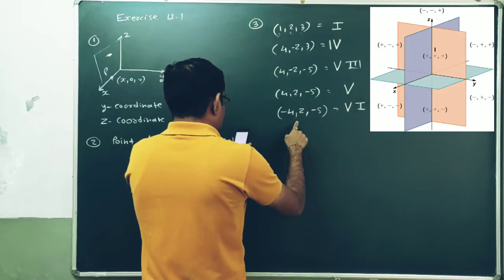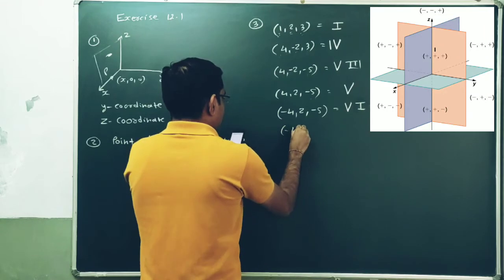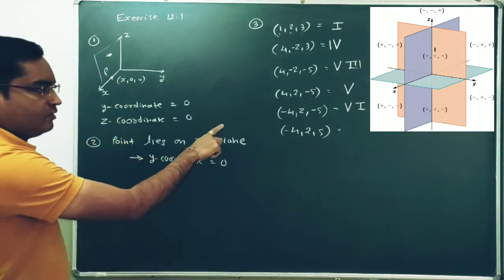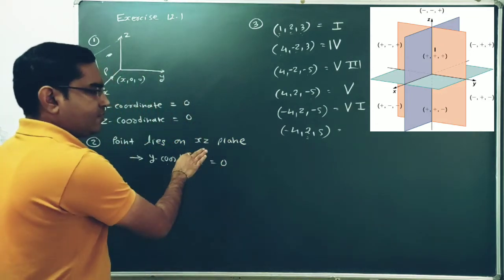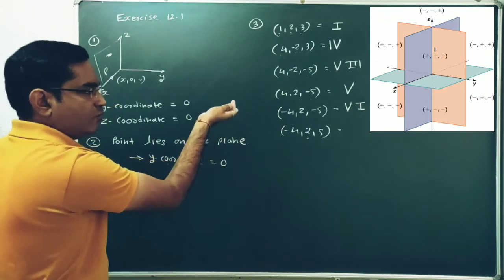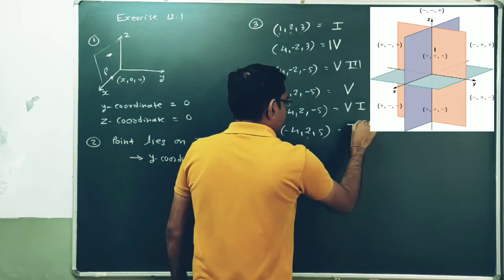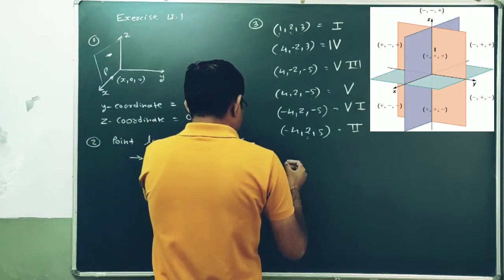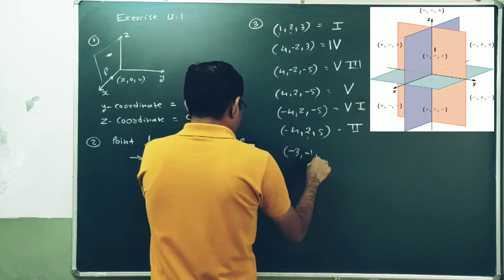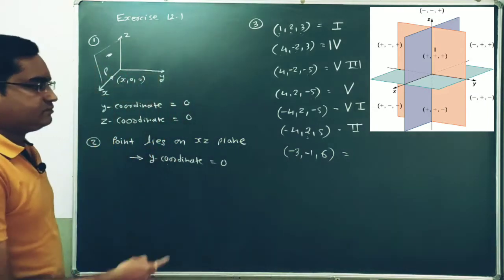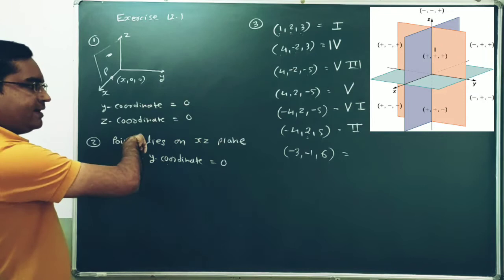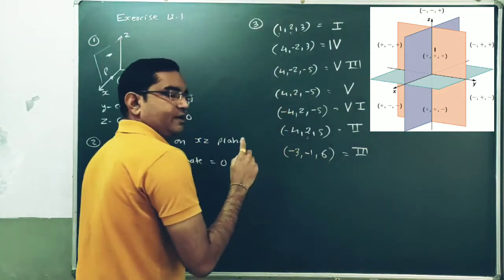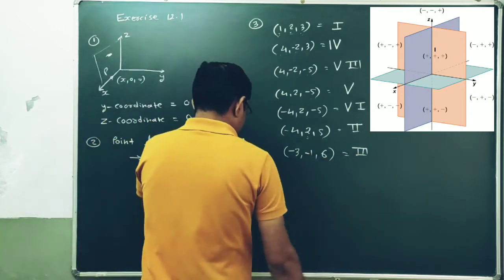Next point: (-4, 2, 5). X coordinate is negative — backward direction. Y coordinate is positive — rightward direction. Z coordinate is positive — upward direction. Backward, right, and upward corresponds to octant number 2. Then the point (-3, -1, 6): x negative — backward, y negative — leftward, z positive — upward. That corresponds to octant number 3.